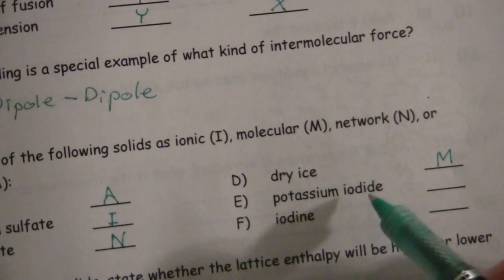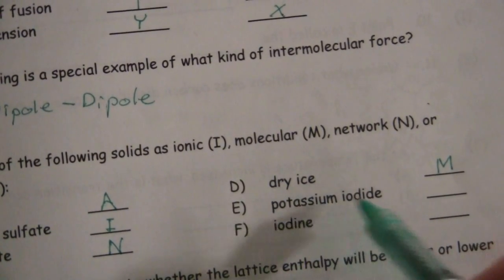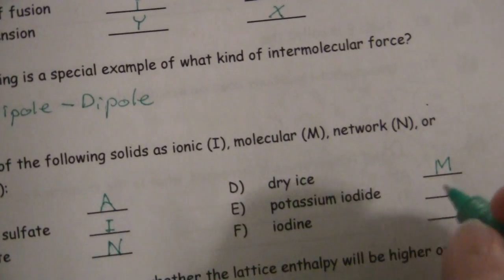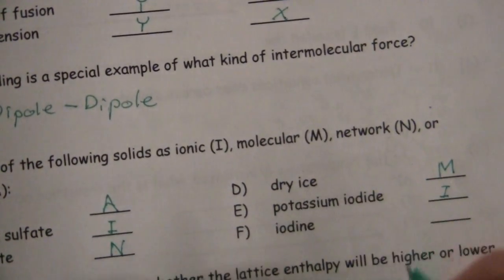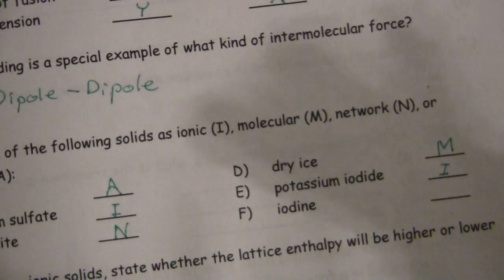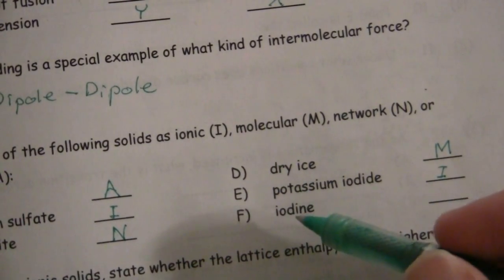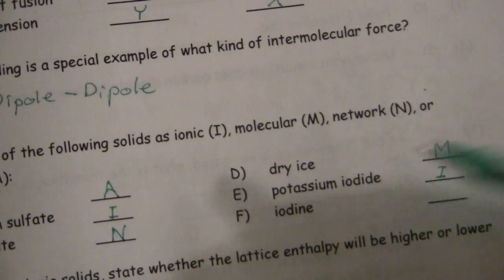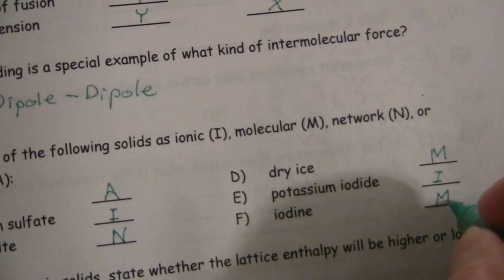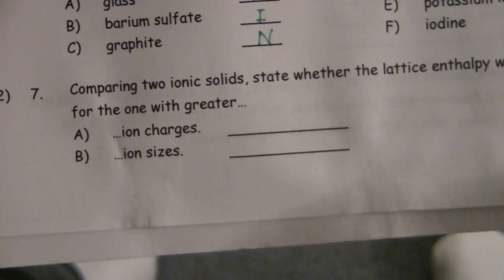Potassium iodide, here we have again an ionic compound, potassium ions and iodide ions, so this is going to be ionic. And lastly iodine, this is the element iodine, but it forms a diatomic molecule I2 and when it's a solid that would be a molecular solid.